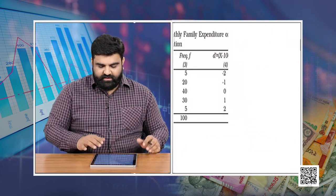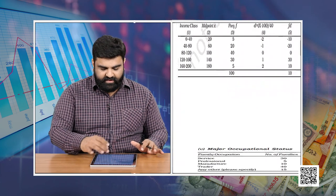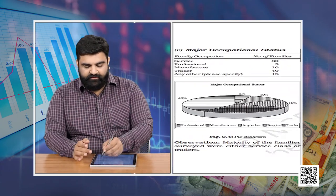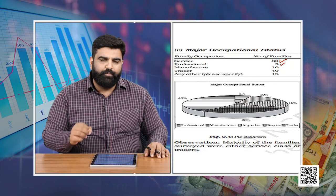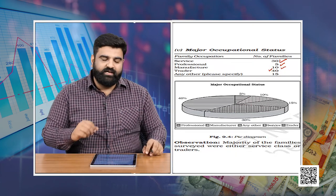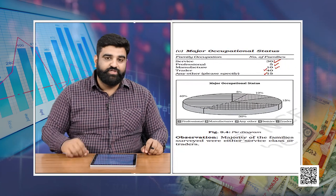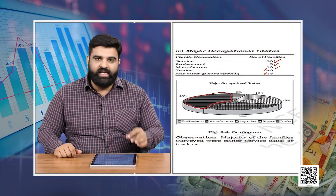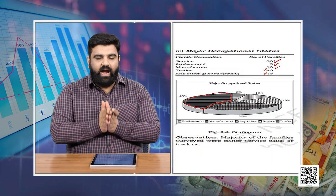The calculations for the standard deviation on the expenditure on toothpaste are shown on screen. Now let's discuss the major occupational status of the people surveyed: 30 families belong to the service class, 5 to the professional class, 10 to manufacturing, 40 to trading, and 15 to other activities. This is represented in a pie diagram, showing that the major portion of the pie is traders — 40% of families were traders.